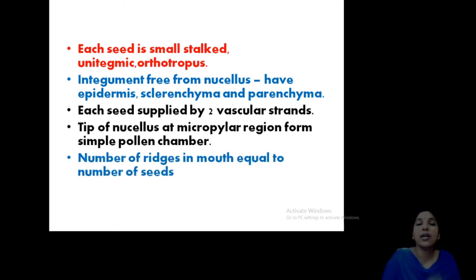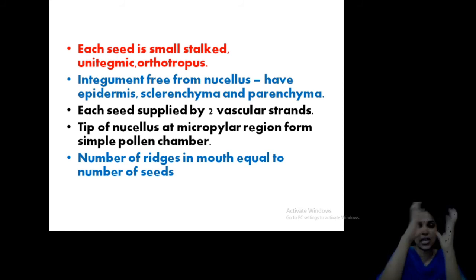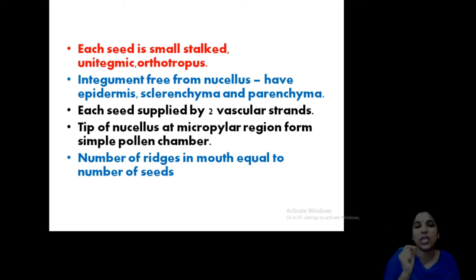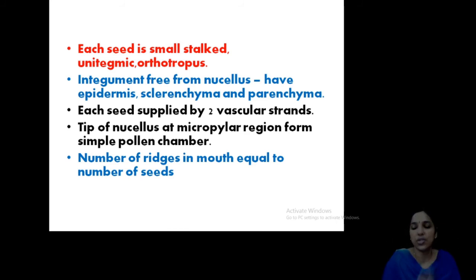There are ridges present on the surface of the fruit. The number of ridges occurring on the apical region or mouth of the entire structure, when counted, is equivalent to the number of seeds inside. So the number of markings or ridges present at the mouth is equivalent to the number of seeds inside — this is an identification feature.